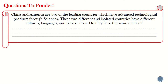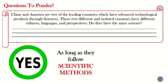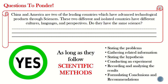For the essential questions: China and America are two leading countries with advanced technological products through science. These countries have different cultures, languages, and perspectives — do they have the same science? The answer is yes, as long as they follow the same scientific methods: stating the problem, gathering information, stating the hypothesis, conducting an experiment, recording and analyzing results, formulating conclusions, and recommendations.